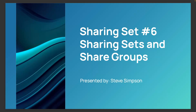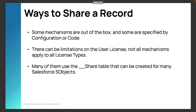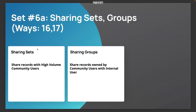We're going over sharing sets and share groups — number six in this series. We're talking about record-level visibility: the mechanisms that control whether a record is visible to a specific user, assuming the user has object-level access. Some mechanisms are out of the box and some are by code. We're specifically talking about licenses that do not have access to the share table — the customer community high-volume licenses. The two mechanisms are sharing sets, where we share records with customer community high-volume users, and sharing groups, where records are owned by community users and need to be shared with internal users.